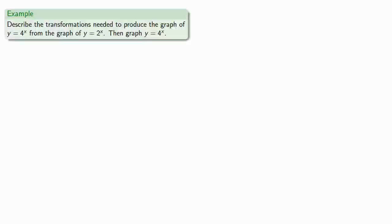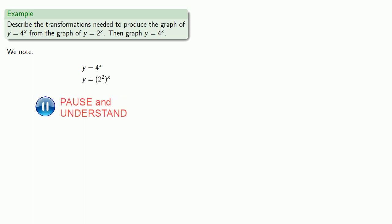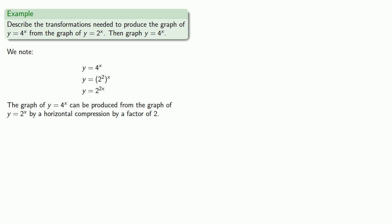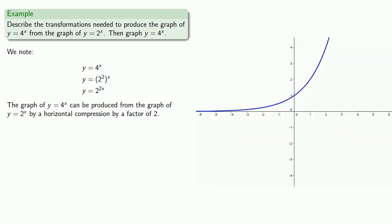For example, let's describe the transformations needed to produce the graph of y equals 4 to the x from the graph of y equals 2 to the x, and then graph it. We note that y equals 4 to the x — well, 4 is 2 to the second — so y equals 2 to the power 2x. This tells us the graph of y equals 4 to the x can be produced from the graph of y equals 2 to the x by a horizontal compression by a factor of 2.